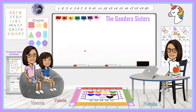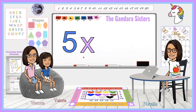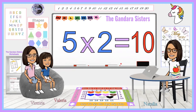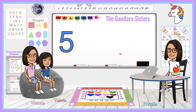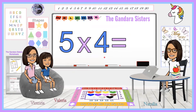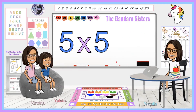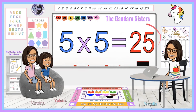Five times one equals five. Five times two equals ten. Five times three equals fifteen. Five times four equals twenty. Five times five equals twenty-five.